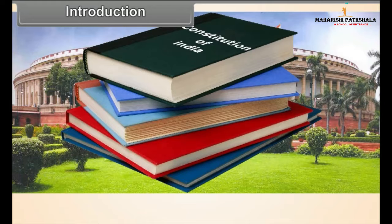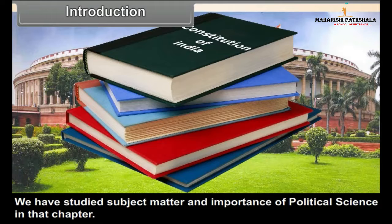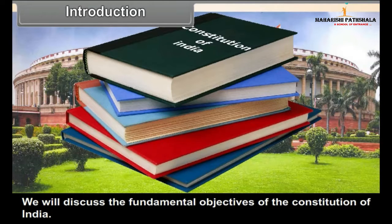Chapter 5: Making of the Constitution. In the previous chapter, we studied what political science is — its subject matter and importance. Now, we will discuss how the constitution is made and who makes it, and we will discuss the fundamental objectives of the Constitution of India.